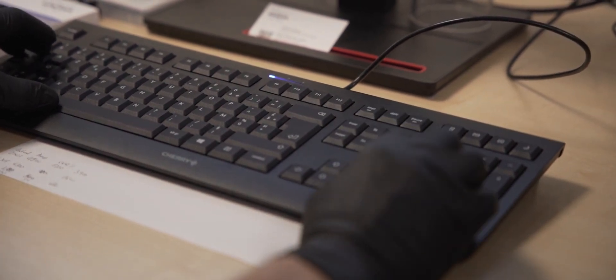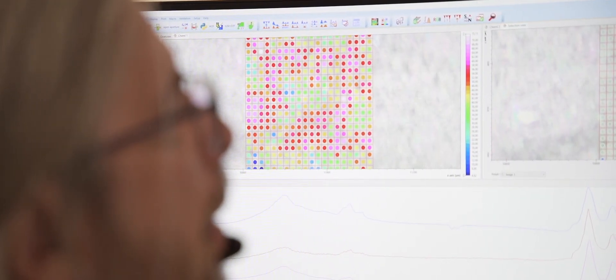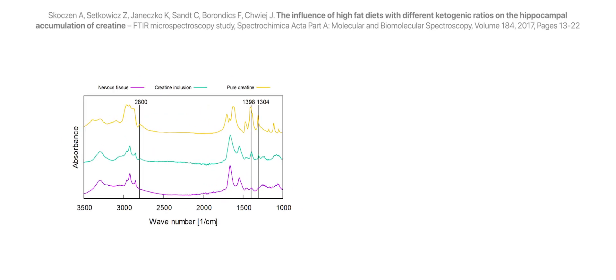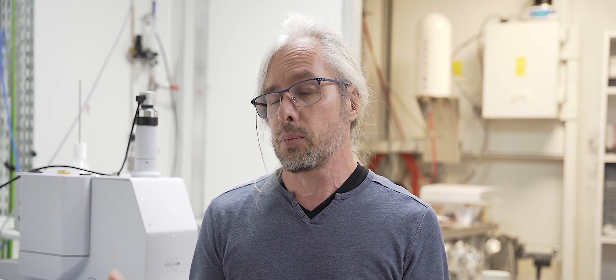A third way to use infrared microspectroscopy would be to look at the conformation of molecules. Infrared is very specific and can give you conformation information, so we can look at the conformation as a biomarker. For example, when we diagnose the presence of amyloid fibrils in the brain of Alzheimer's disease patients.